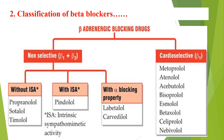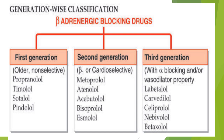Generation-wise classification: first generation non-selective drugs are propranolol, timolol, sotalol, and pindolol. Second generation beta-1 selective cardioselective drugs are metoprolol, atenolol, acebutolol, bisoprolol, and esmolol.